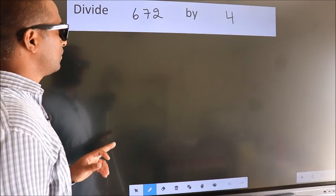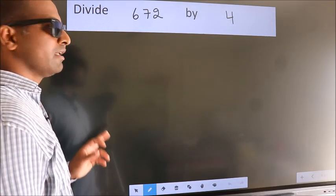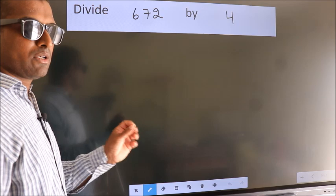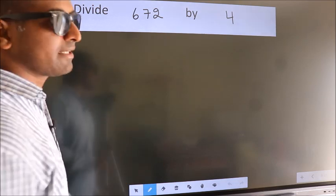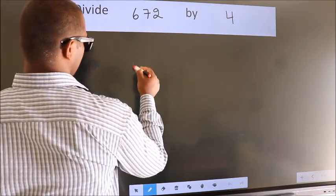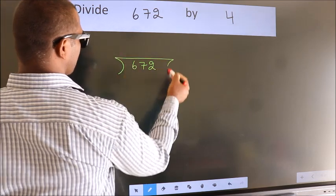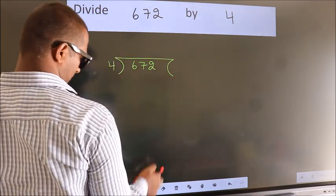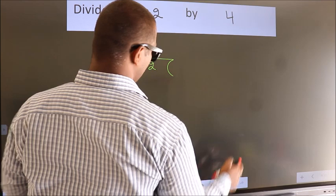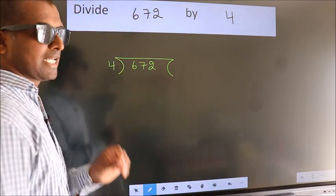Divide 672 by 4. To do this division, we should frame it in this way. 672 here, 4 here. This is your step 1.